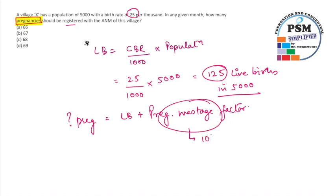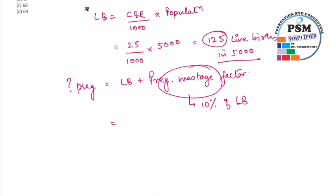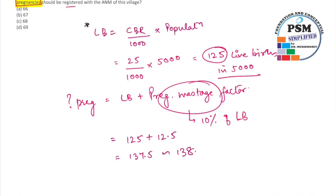Please mind it that the pregnancy wastage factor for Indian circumstances, we take it as 10 percent of the live births. So it's pretty straightforward: the live births is 125 plus 10 percent of 125 which is 12.5. So total would be 137.5, roughly we can take it as 138.